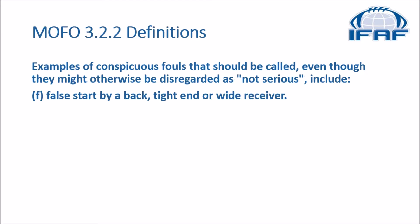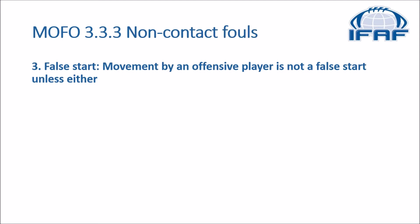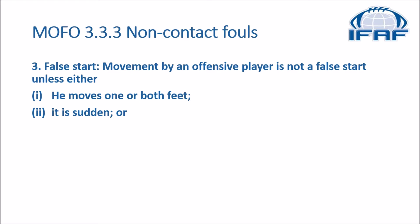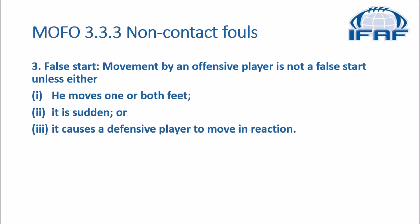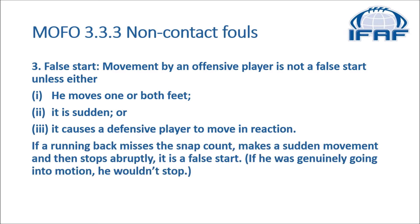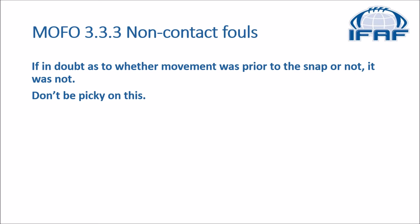In the MOFO we go to section 3.2 definitions. Examples of conspicuous fouls that should be called even though they might otherwise be disregarded as not serious include false start by a back, tight end, or receiver. In section 3.3 non-contact fouls, false start says movement by an offensive player is not a false start unless: one, he moves one or both feet; two, it is sudden; or three, it causes a defensive player to move in reaction. If a running back misses the snap count, makes a sudden movement and then stops abruptly, it is a false start. If he was generally going into motion, he wouldn't stop. And finally, if in doubt as to whether movement was prior to the snap or not — it was not. Don't be picky on this. Now let's have a look at some game film.